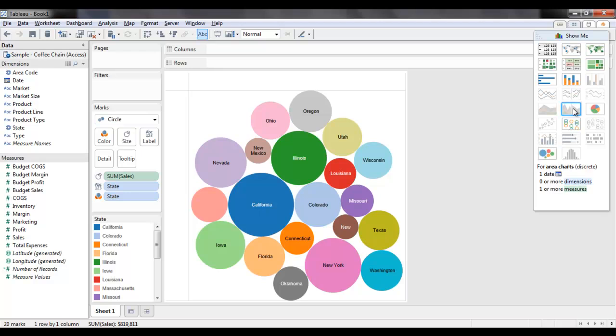If you observe, some views are grayed out. This is because our selected dimension and measure do not meet the criteria specified by that visualization. When you hover over the view, the fields required to work with that particular view are displayed at the bottom.